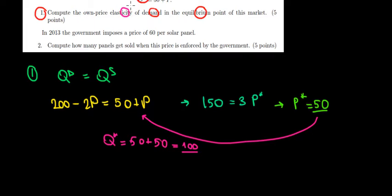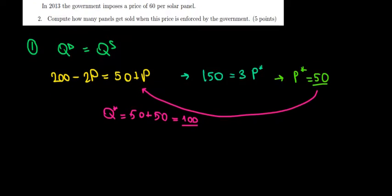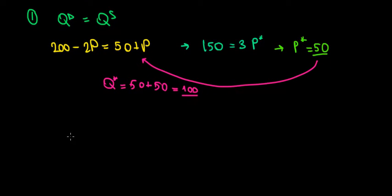Now how can we calculate the elasticity? Let's remind ourselves what is elasticity. Elasticity in this case is going to show us the percentage change in quantity demanded relative to a 1% change in price at this specific point. So we want to know how sensitive, how reactive consumers are when the price is equal to 50 and there's 100 units in demand on the market. The formula for the elasticity is the price divided by the quantity times the derivative of the quantity with respect to the price.